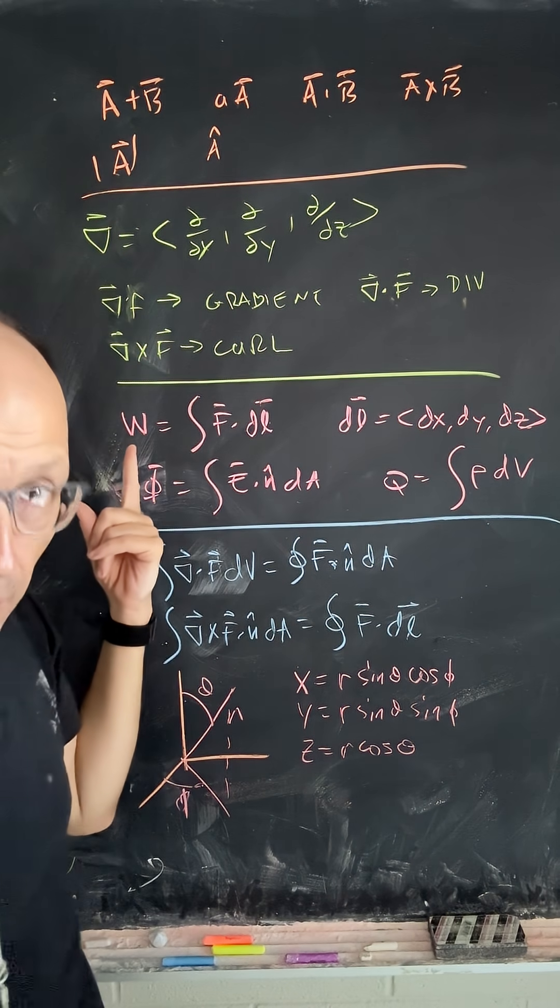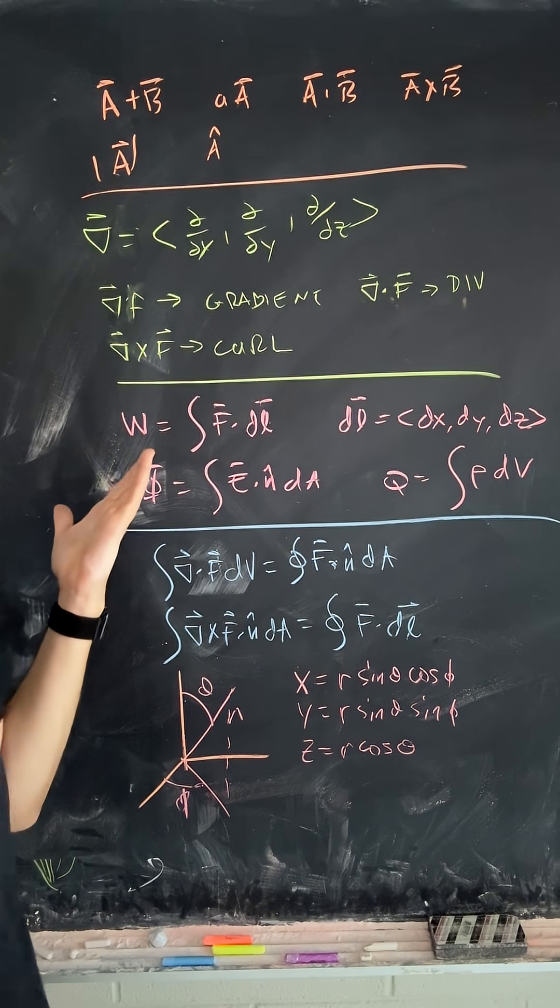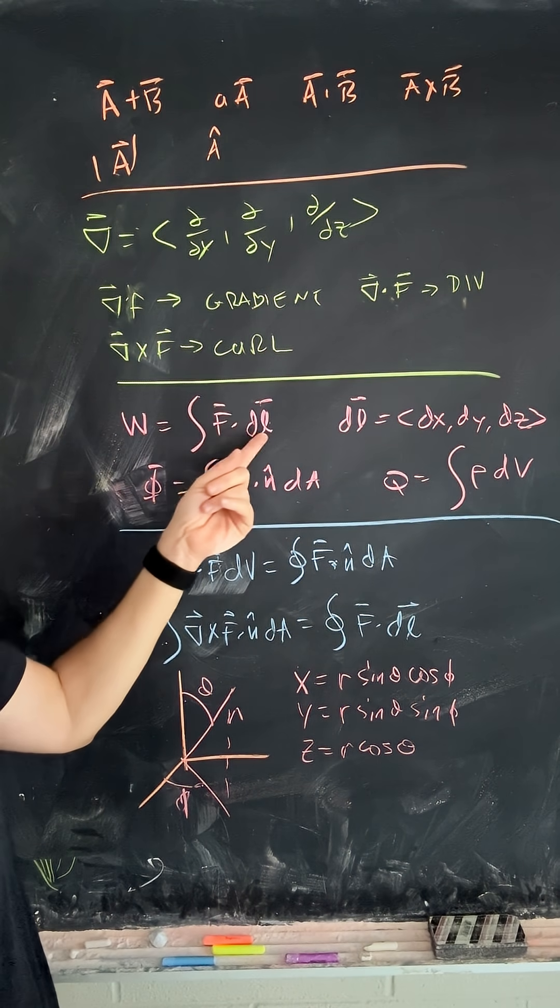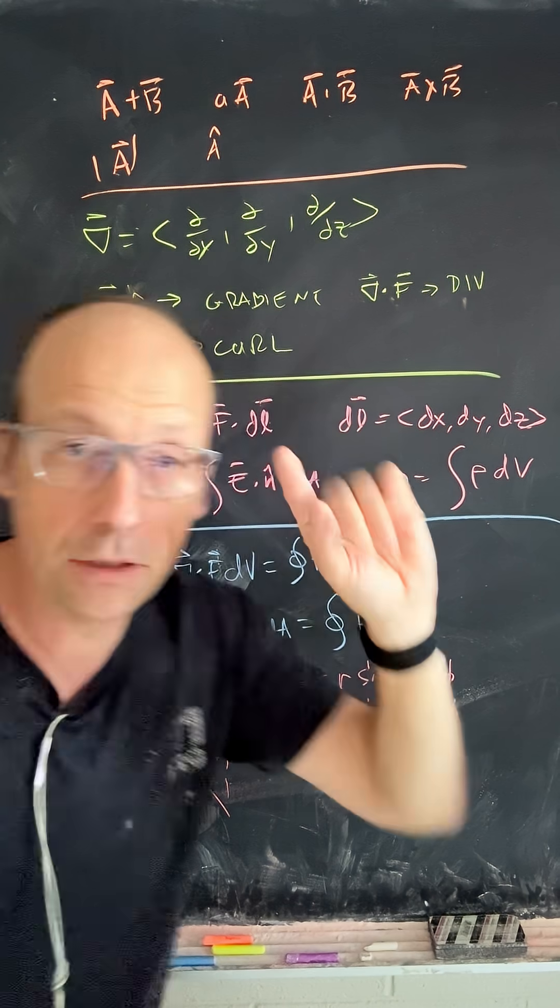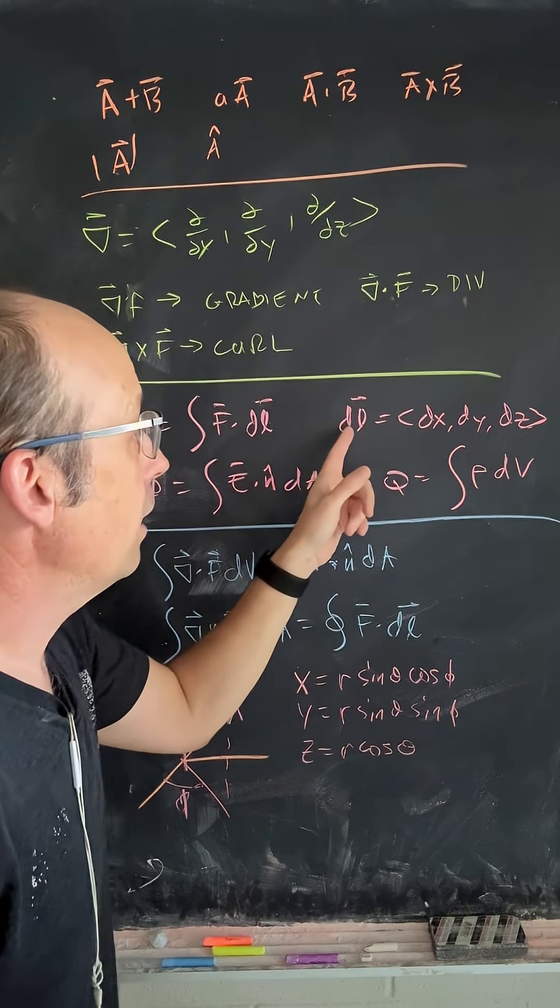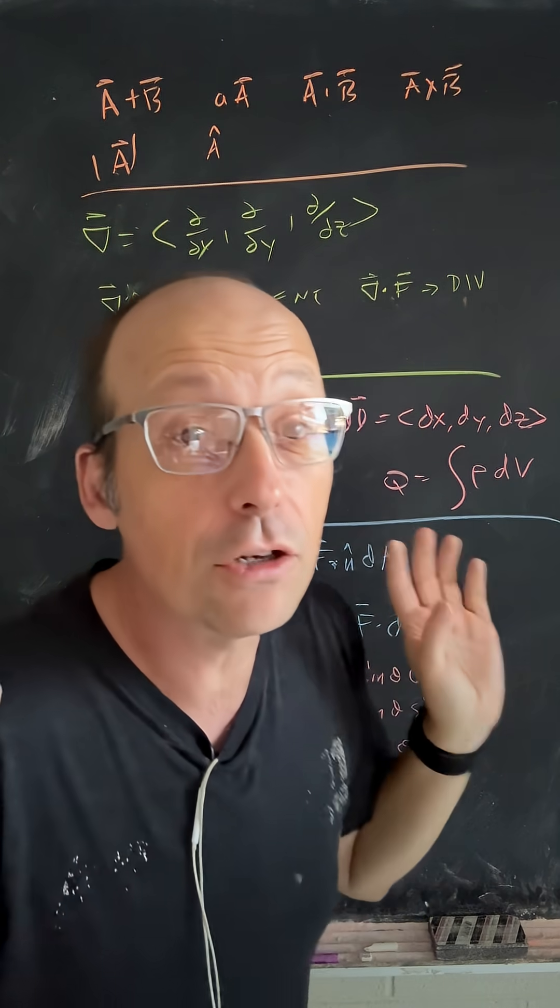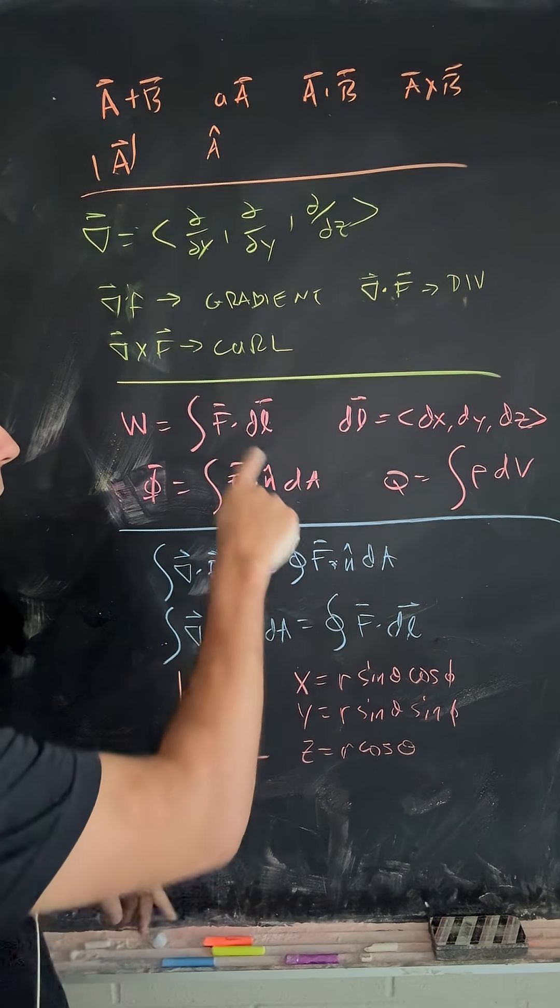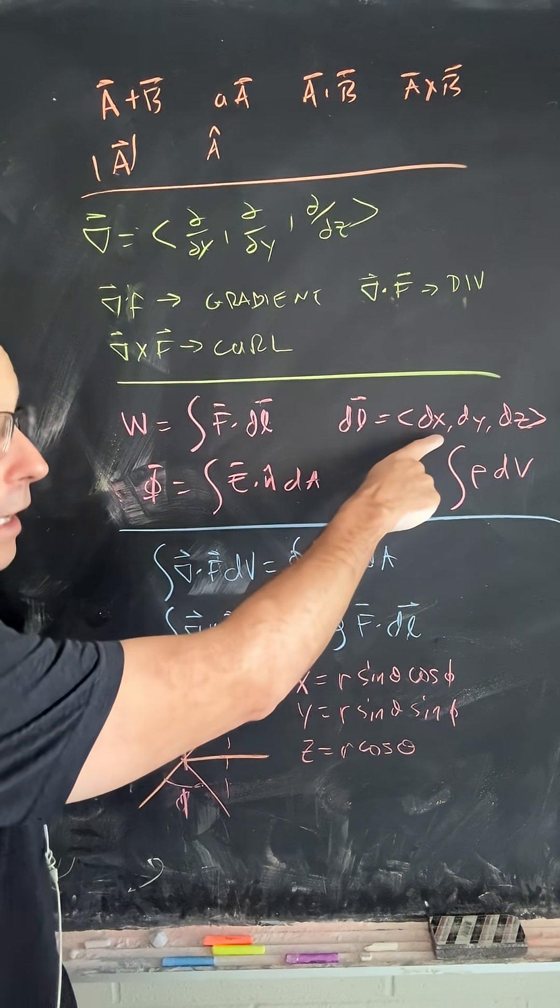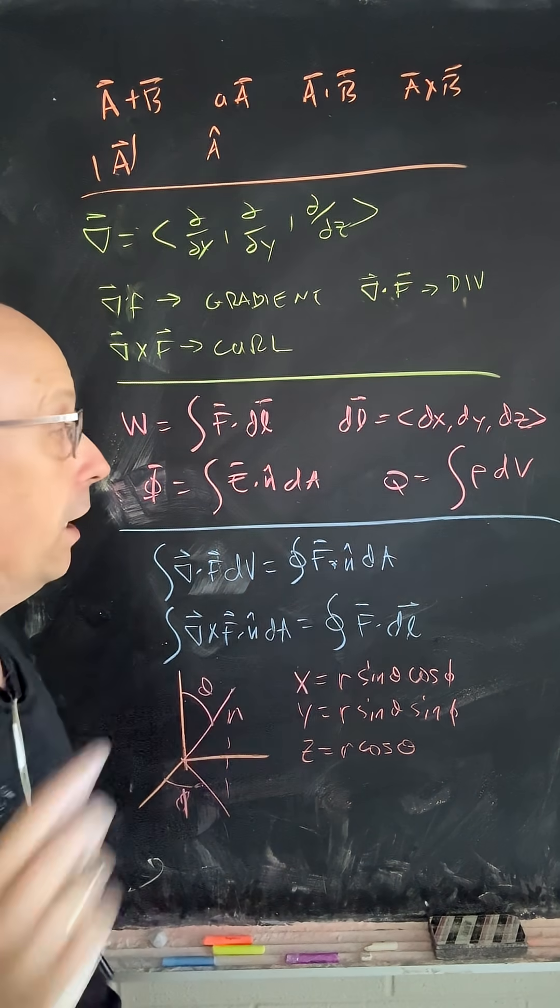Next, we have line integrals. So we have work as a line integral of f dot dl from a to b. Now, here's the thing that you can make a mistake on. DL in Cartesian coordinates is dx, dy, dz. Don't put negative signs on there. The direction comes from the limits of integration. And then the path allows you to make connections between dx, dy, and dz.